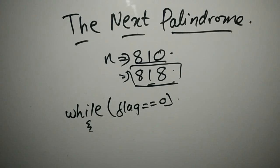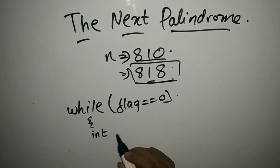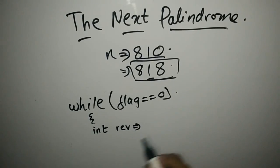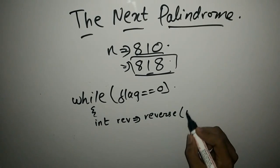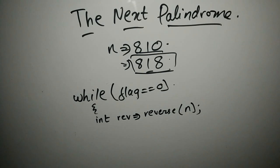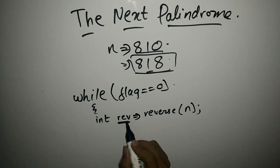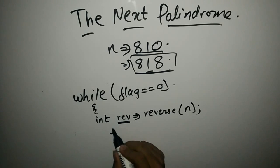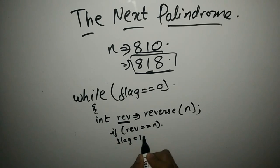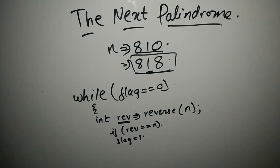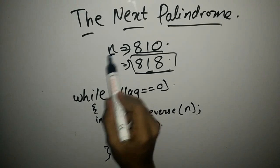We take an integer variable called reverse. We write a function reverse(), pass our original number into it, and it will reverse the number and store it. Then we compare whether reverse is equal to N. If reverse equals N, then flag is set to 1, meaning we have found a palindrome. Then the flag becomes 1 and we break out of the loop, and at the end we print the N value where it was found.